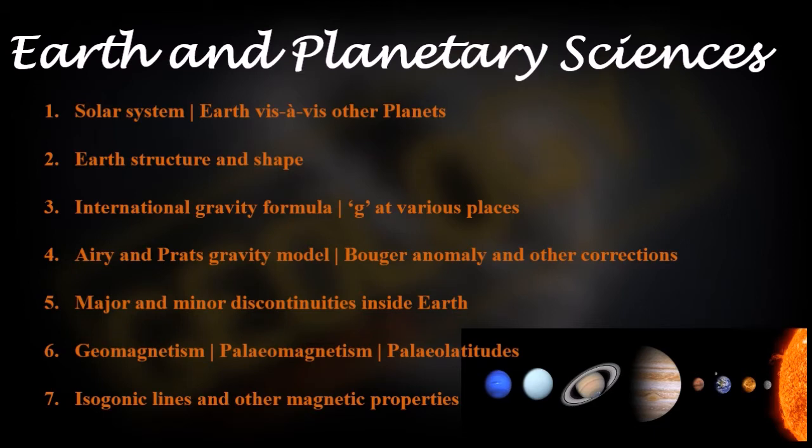Then Airy and Pratt gravity model, Bouguer anomaly and other corrections like terrain correction. Then major and minor discontinuities inside the Earth as we go from surface to the core. All these topics are selected because they have been asked many times in the examination. Then geomagnetism, paleomagnetism, paleolatitudes, how they are related, what is the concept behind it, because questions are coming from concepts. Then isogonic lines and other magnetic properties.